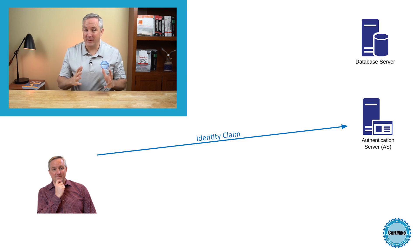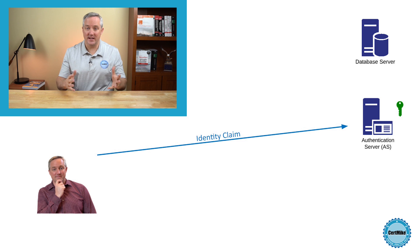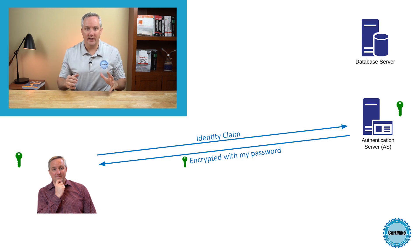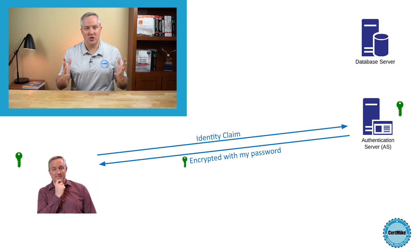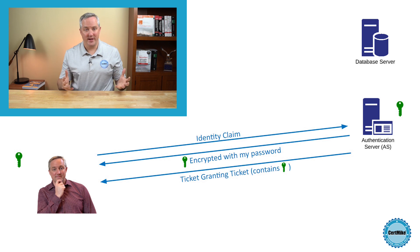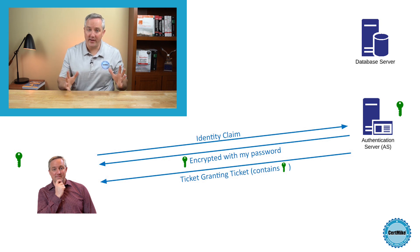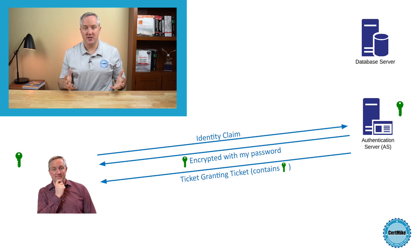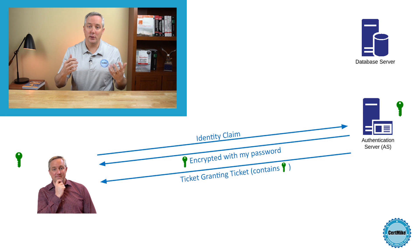The authentication server then looks me up in its database and retrieves my password. Next, the authentication server randomly generates a session key that I'll be using for the remainder of my Kerberos session. It then takes that session key, encrypts it using my password, and sends me that encrypted key. I'm going to be using that key to communicate with a different server called the Ticket Granting Server, or TGS, so that key is called the Client TGS Session Key. The authentication server also prepares another message called the Ticket Granting Ticket, or TGT. That message includes my client ID, my IP address, a validity period, and the randomly selected Client TGS Session Key. The authentication server then encrypts that TGT using a key known only to the authentication server and the Ticket Granting Server, and sends me the encrypted Ticket Granting Ticket.